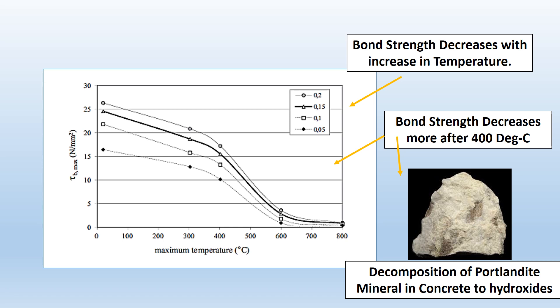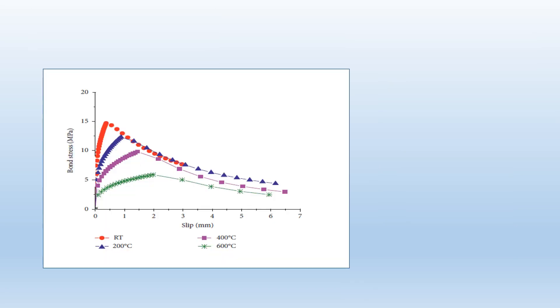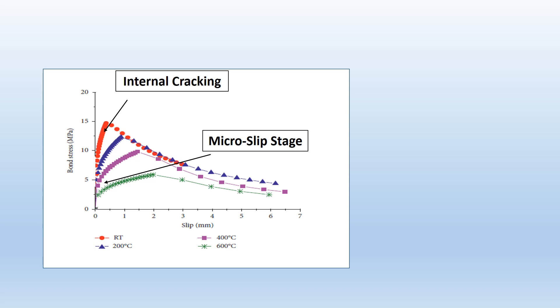The interlocking is lost at higher temperature and the thermal cracks occur in concrete and it has lesser bearing capacity for the bond stress. The bond stress thereby at higher temperatures could be seen to have a flatter curve. There is a micro slip stage followed by internal cracking of concrete which is then followed by the pull out of the steel bar.